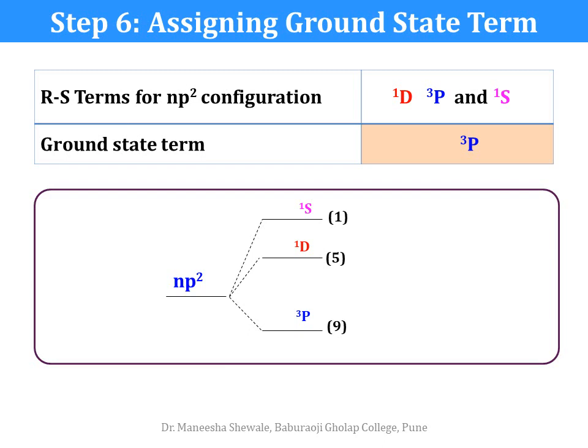So the RS terms for NP2 configuration are singlet D, triplet P, and singlet S. Using Hund's rule of maximum spin multiplicity, the ground state term will be triplet P. These 3 terms can be arranged in increasing order of energy as triplet P, singlet D, and singlet S. So here we have seen how to construct the microstate table for the NP2 configuration, how to find the RS terms, and finally how to assign the ground state term.